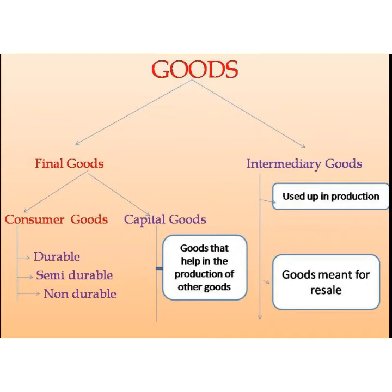Now we will look at the different types of goods. Goods are material things which satisfy human wants. Goods are broadly classified into final goods and intermediate goods. Final goods are further classified into consumer goods and capital goods, while intermediate goods are classified into goods used up in production and goods meant for resale.